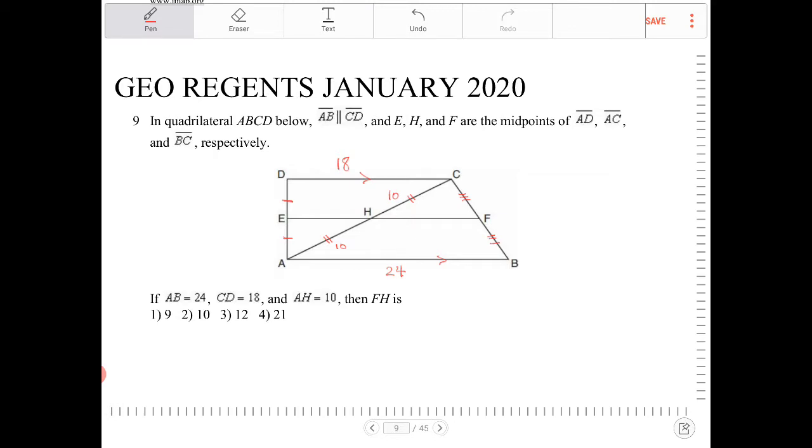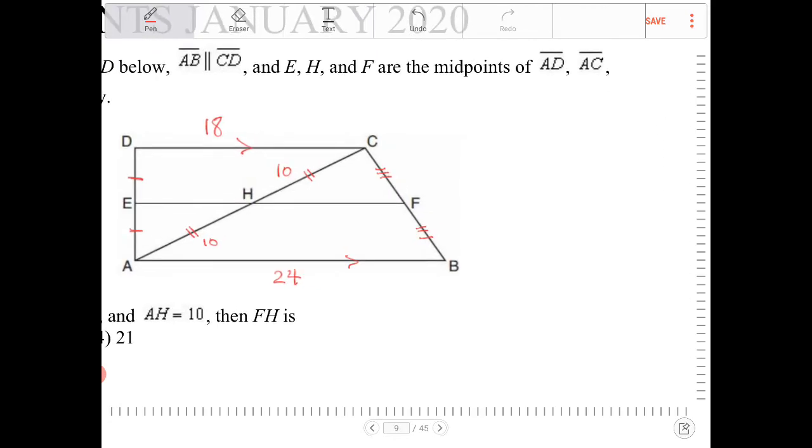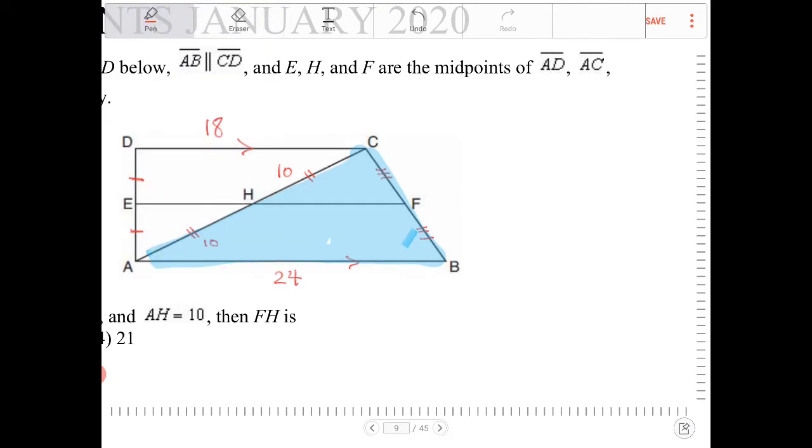So the question is to find out what is the length of FH. Well, looking at this, you should be able to recognize the situation right here. I'm going to try to outline this so you can see it better. What I have here, this triangle, is going to be similar to this triangle.